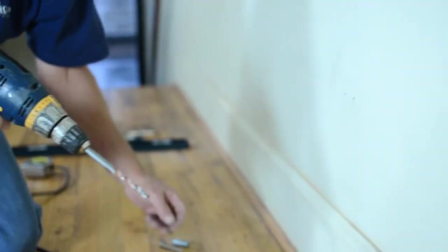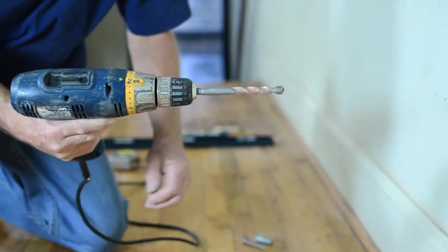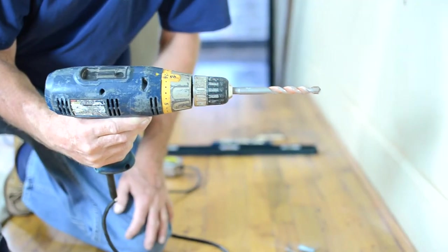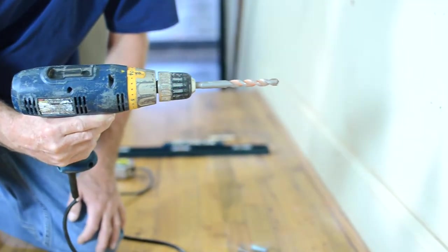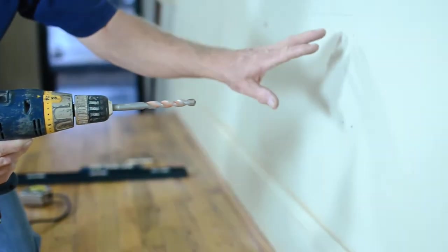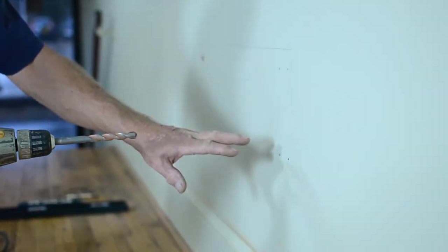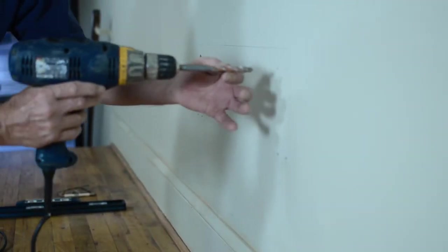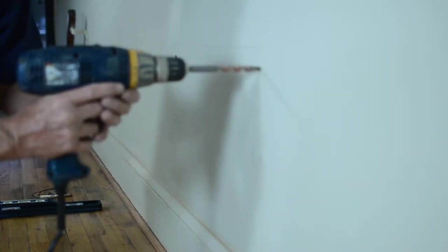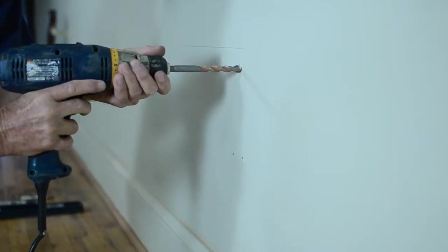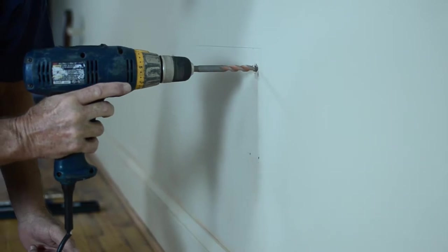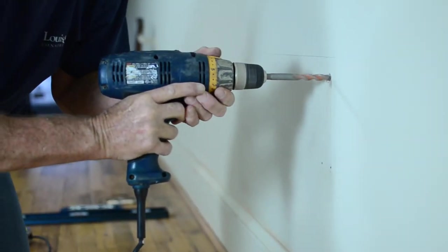For this quarter inch shield you have to use a half inch masonry bit, which we have right here. It can also be purchased at Lowe's, Home Depot, or any hardware store. So you've already marked the holes because you've already set your brackets up so all your holes are already in place. So you would just start in the center of the hole and you just drill it out.